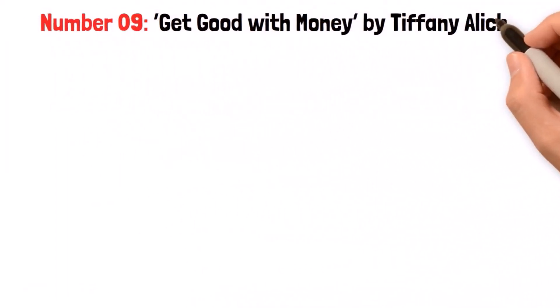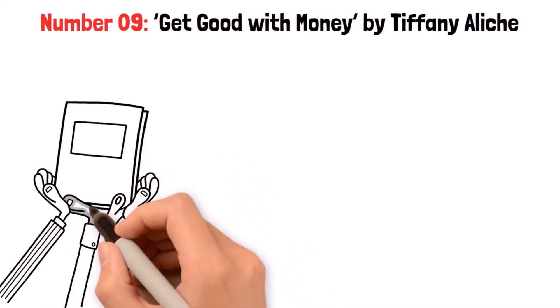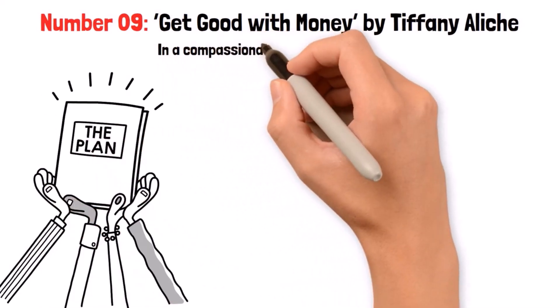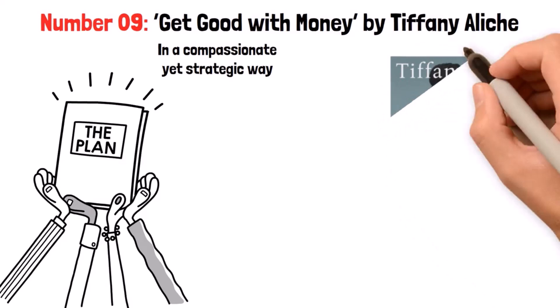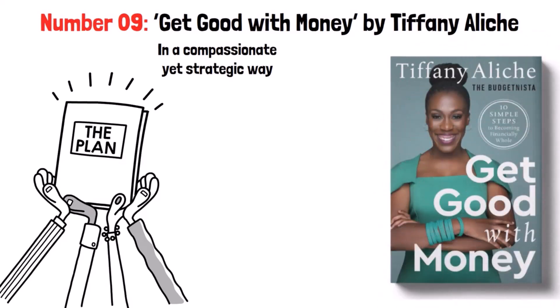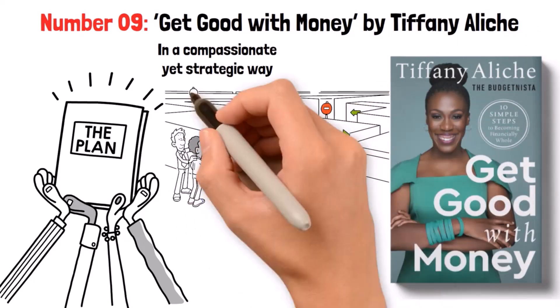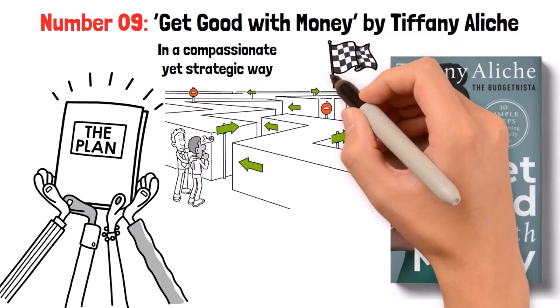Number 9: Get Good with Money by Tiffany Aliche. Another book that promises to help you get good with money in a compassionate yet strategic way. Tiffany believes that improving your finances is a journey, not a destination, and her book lays out a simple 10-step blueprint to transform how you think about and handle money.